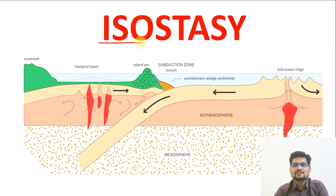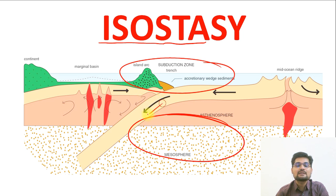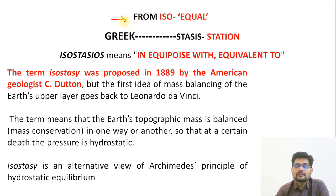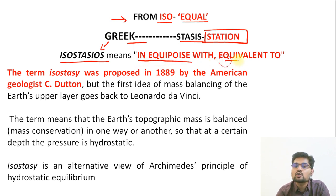Now let's understand what isostasy is all about. As we have learned about the interior structure of the earth in the previous session, let's understand the adjustment between the upper layers and the lower layers — how this material from the upper layer goes to the lower layer and back again. The word comes from Greek: 'iso' meaning equal and 'stasis' meaning station, so isostasy means in equipoise with, or equivalent to.